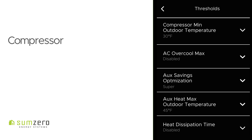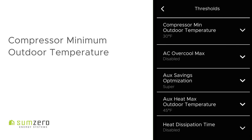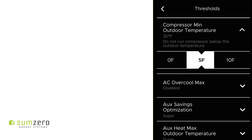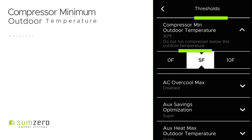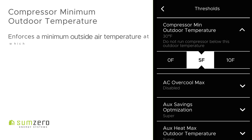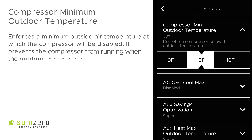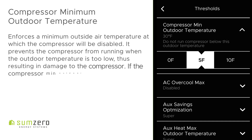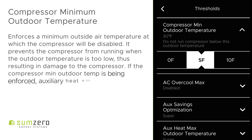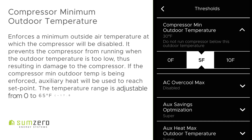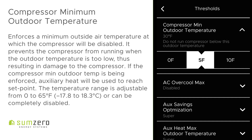Followed by Compressor Minimum Outdoor Temperature. This setting enforces a minimum outside air temperature at which the compressor will be disabled. It prevents the compressor from running when the outdoor temperature is too low, thus resulting in damage to the compressor. If the compressor minimum outdoor temperature is being enforced, auxiliary heat will be used to reach set point. The temperature range is adjustable from 0 to 65 degrees Fahrenheit or can be completely disabled.